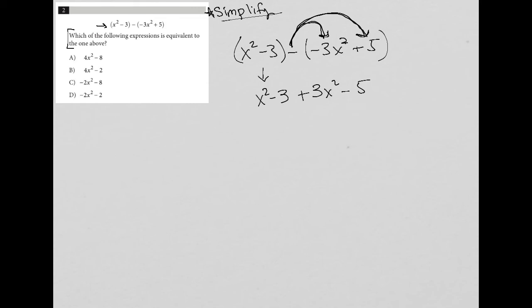So now I have some more like terms. I have x squared plus three x squared, which is four x squared. And I have negative three minus five, which is negative eight.